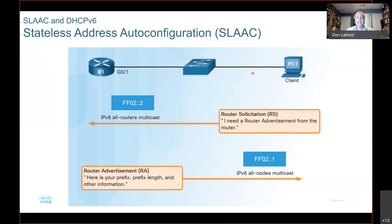The client sends out using FF02, which is the all-routers multicast address, saying it needs a router advertisement from the router. The router then says, here's your prefix, prefix length, and other information. It's giving the prefix and prefix length, which the host will use to create its own address, and other information such as the DNS server.